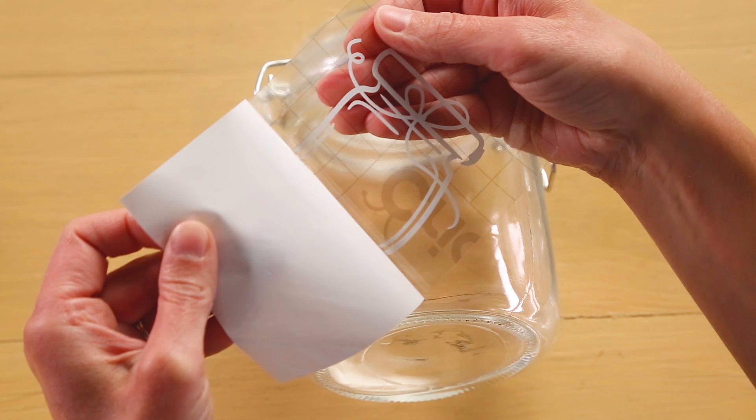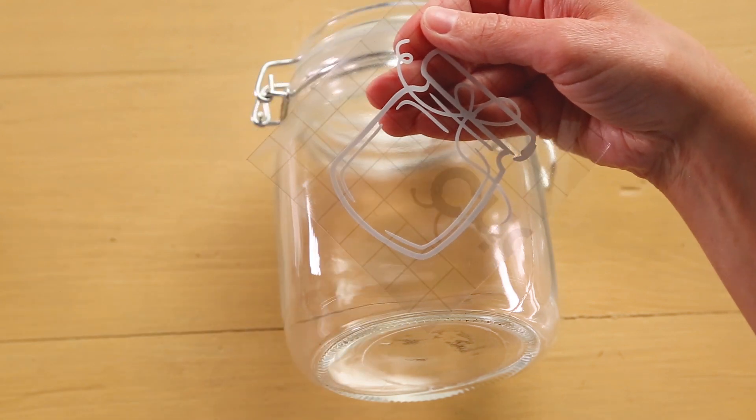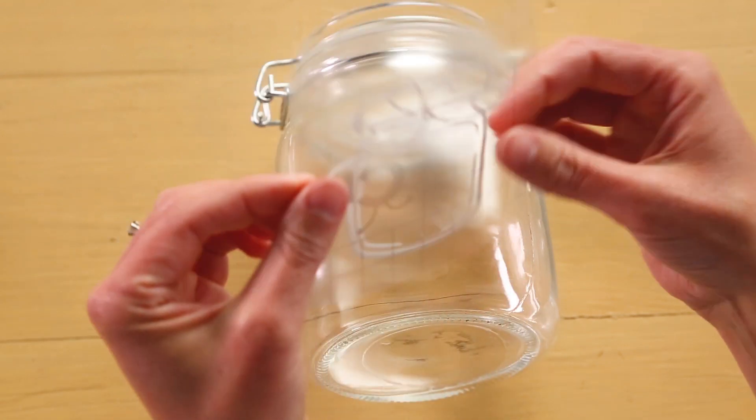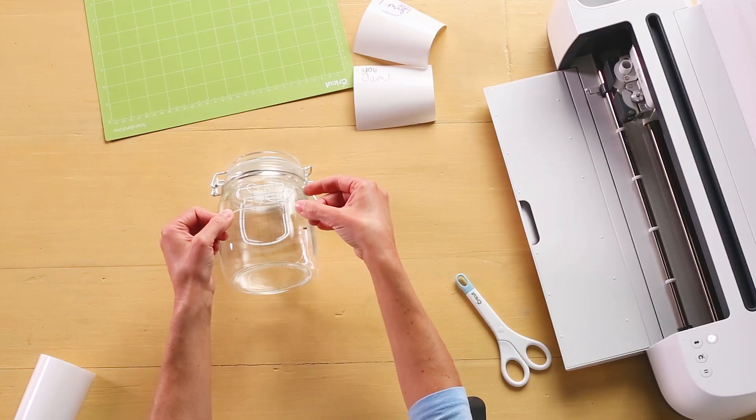Now remove the liner from the transfer tape. Your image will remain. Next, position your image on your jar so it's perfectly in place.